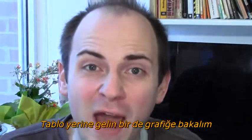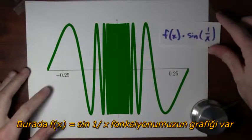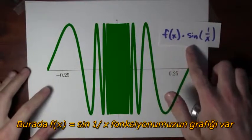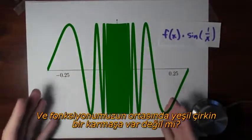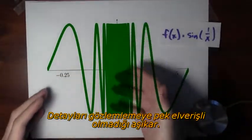Instead of a table, let's look at a graph. Here I've got a graph of the function f(x) = sin(1/x). And you see the middle of this graph is just that horrible green blob, right? It's really hard to make out any detail.